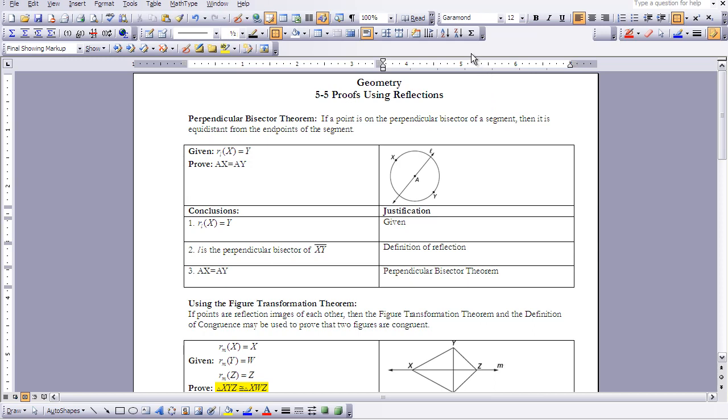We're introduced to a new theorem called the Perpendicular Bisector Theorem. Now that we have studied reflections, this theorem can be used. It states if a point is on the perpendicular bisector of a segment, then it is equidistant from the endpoints of the segment, and we can use reflections to do that.